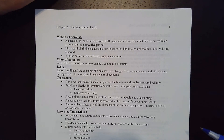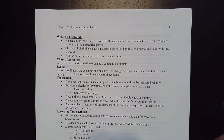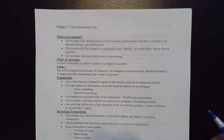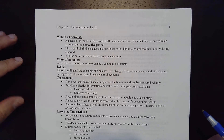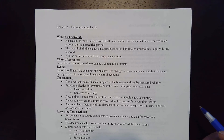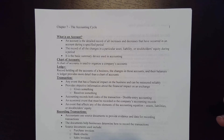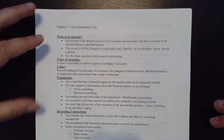Today we are going to talk about Chapter 7: The Accounting Cycle. To discuss the accounting cycle, we start with the account. An account is a detailed record of all increases and decreases that have occurred during a specific period — the record of all changes in a particular asset, liability, or stockholders' equity. It is a basic summary device used in accounting.